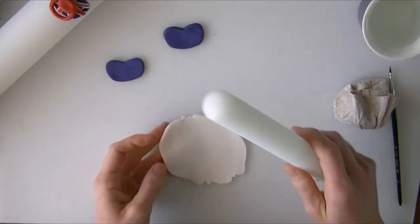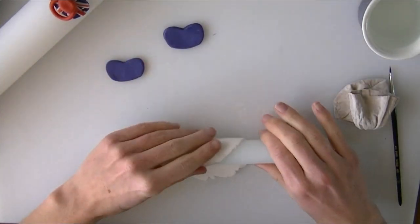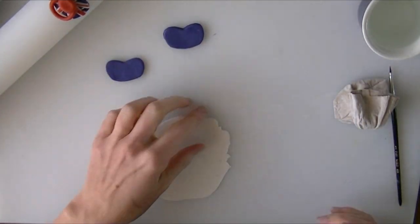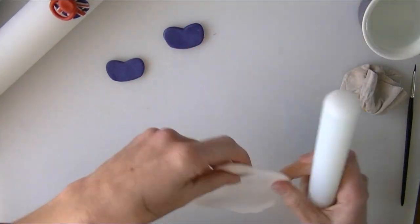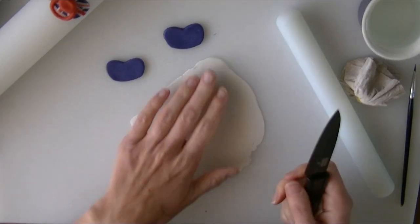I've managed to get a bit of blue or red in my white. Try and keep your white away from the other colors so that you don't get red or blue mixed in with it. Now I've got that rolled out nice and thin.